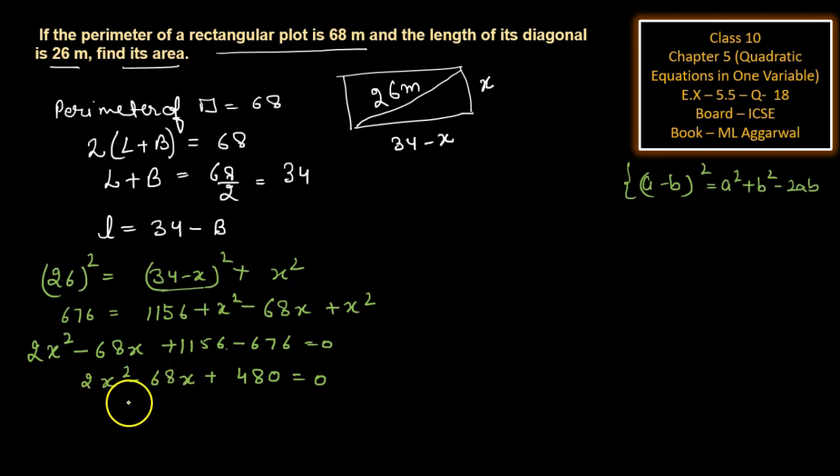Taking 2 common and shifting to the right side, we get x² minus 34x plus 240 equals 0.